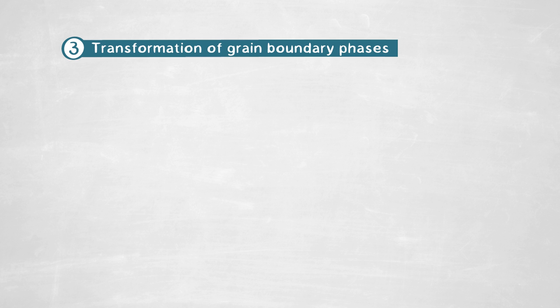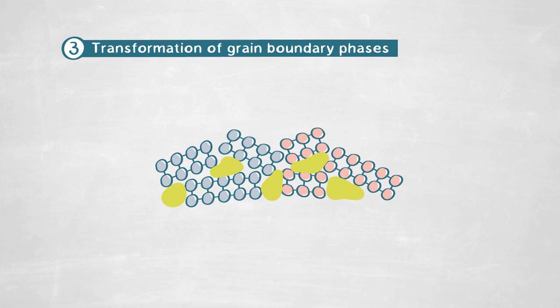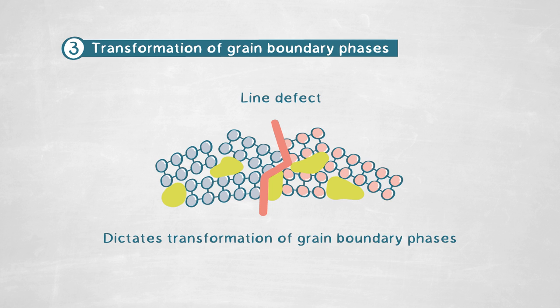This was proposed 50 years ago by theoretical concepts, but it had never been observed — it was really too difficult to observe in these very confined spaces. Also very interesting: when you think of these two different grain boundary phases as sheets of paper glued together, where you have the glue line, there is a line defect which separates the two grain boundary phases.